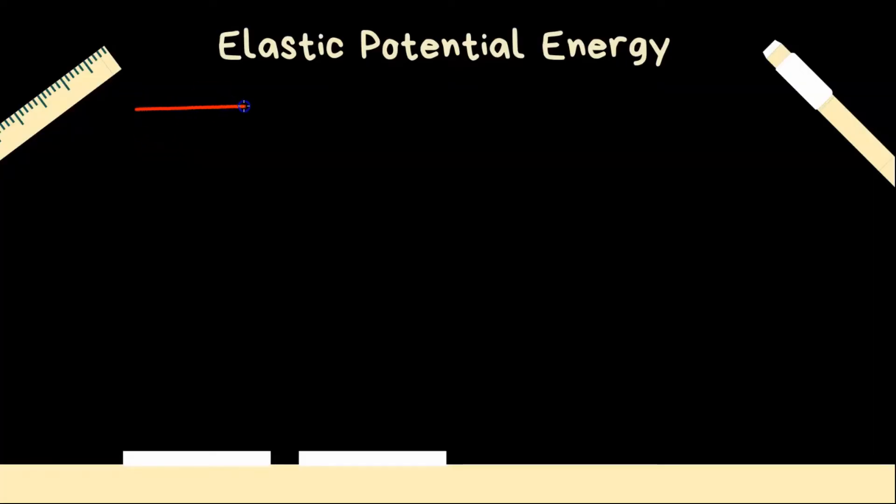So for our bungee jump problem, what we originally have is our spring in its equilibrium position with a mass just placed on it about to fall. And then what happens is it falls and reaches some maximum extension down here with the mass on it. Now at that maximum extension, that's where it's going to go no lower. Let's call that height as zero. Now over here, where the spring has not been either extended or compressed, this is where we're going to have x as zero. That is the equilibrium position for the spring.